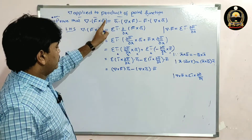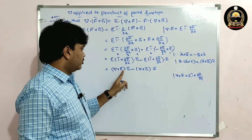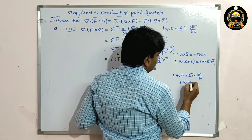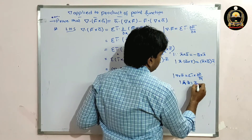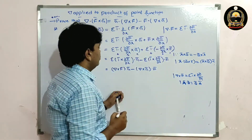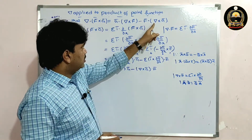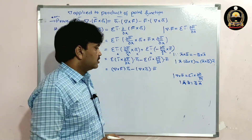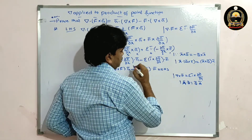Now we check: g-bar dot del cross f-bar and del cross f-bar dot g-bar. Since we know a-bar dot b-bar equals b-bar dot a-bar, both are the same. So we get g-bar dot del cross f-bar minus f-bar dot del cross g-bar. This is the RHS.